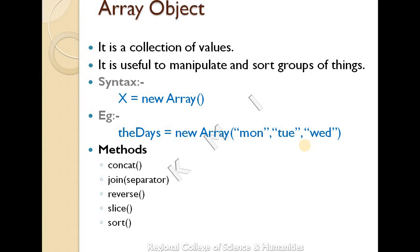concat joins two or more arrays to create one new array. join joins all elements of an array together, separated by a specified separator character or comma. reverse reverses the order of elements. slice returns a specified part of the array.